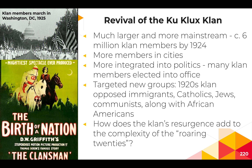First, there was the lynching of Leo Frank — a Jewish American man who was convicted of murder, had his sentence commuted, and was ultimately lynched in response. This helps us understand that the Klan was not just targeting Black Americans but anyone they considered un-American.